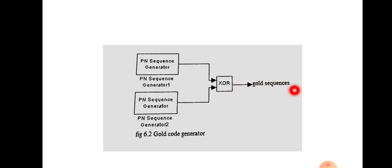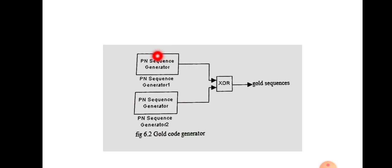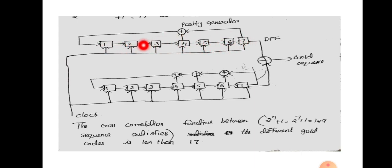Now we will observe the cross-correlation value of this sequence, referring to the PN sequence generator diagram shown in the first part of the class. The PN sequence generator consists of D flip-flops forming a shift register, a parity generator, and a modulo-2 adder. The last D flip-flop output feeds into the parity generator, whose output connects back to the first flip-flop.